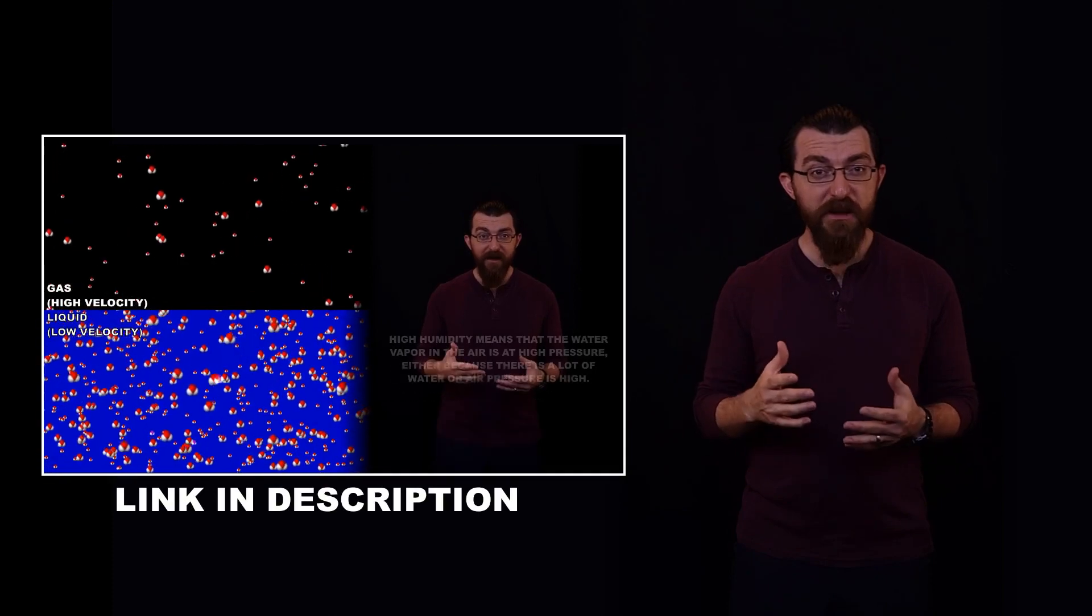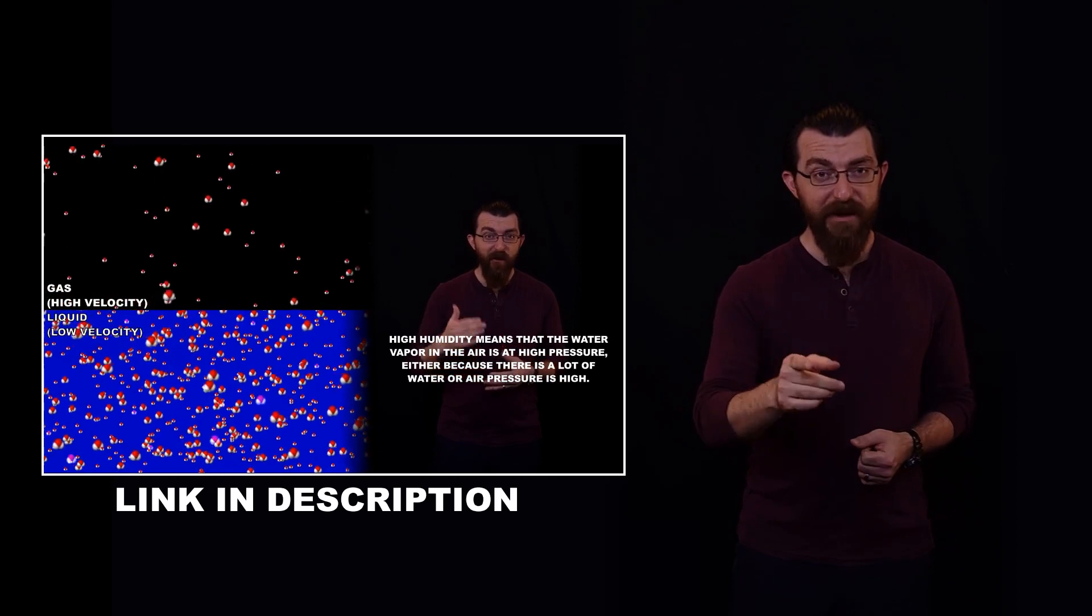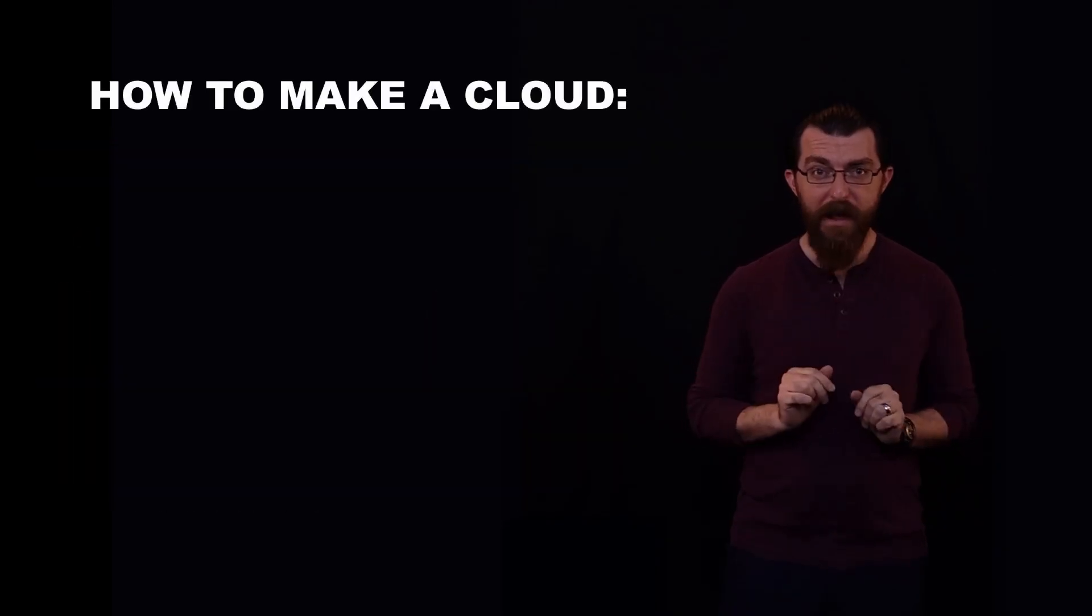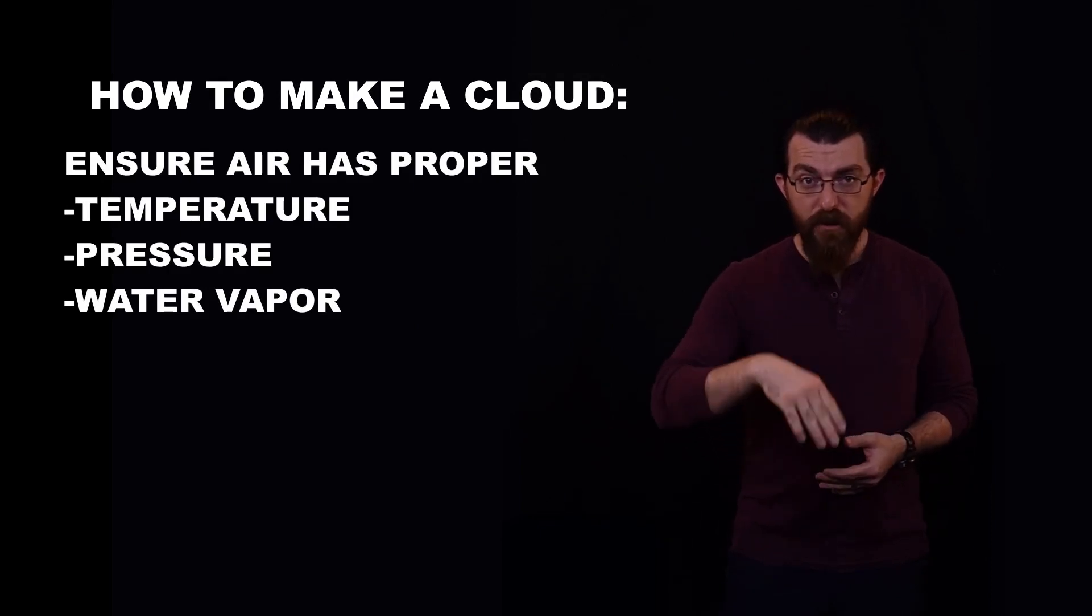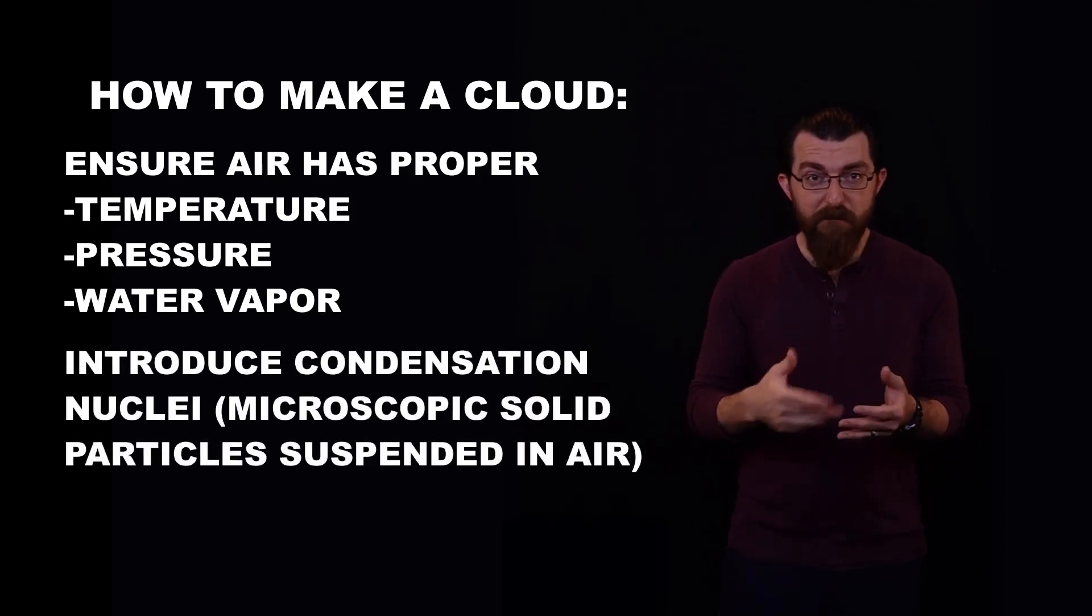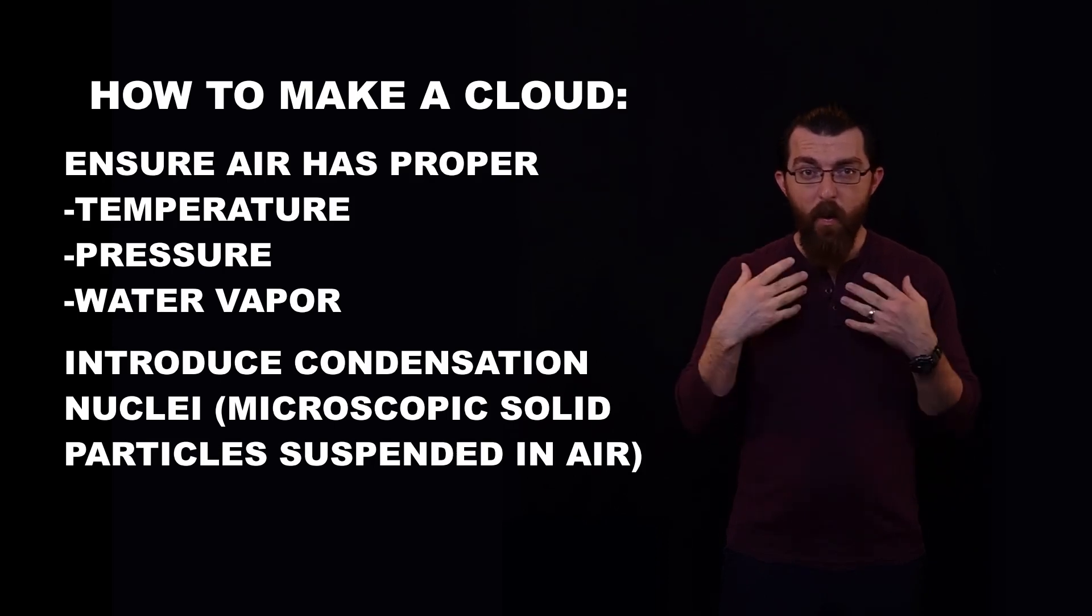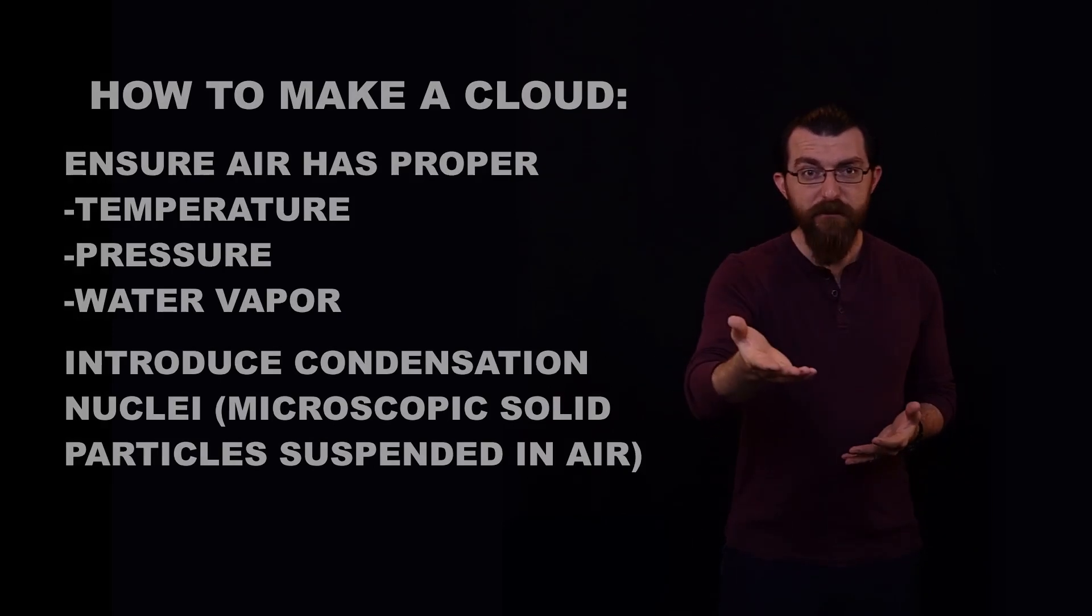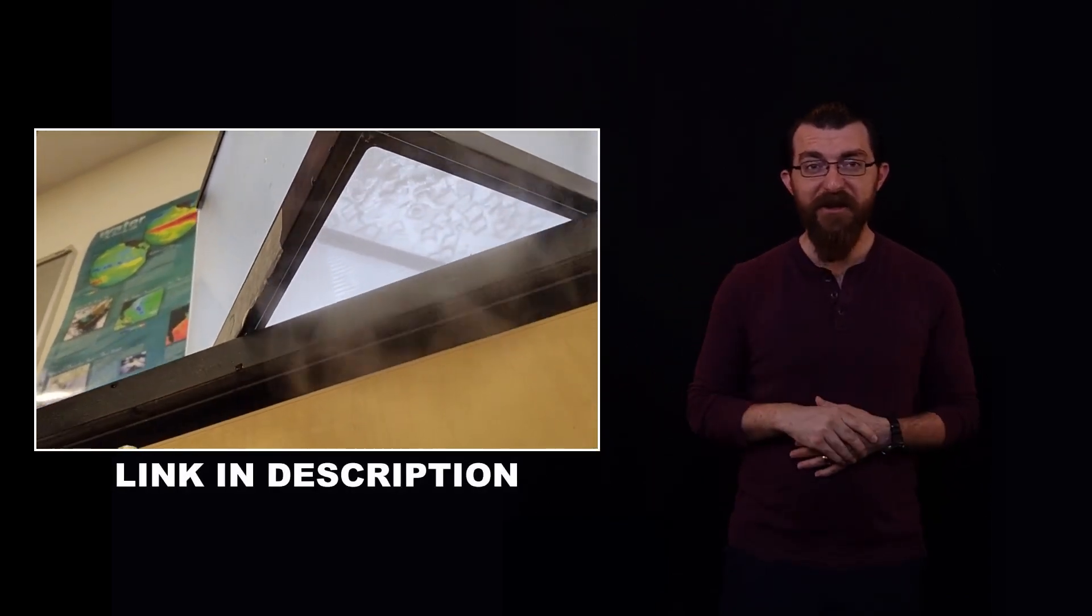If you'd like to see more discussion about these processes and how they relate to humidity in clouds, check the link. Here's how to make a cloud. Change the temperature and or pressure of air that contains water vapor so that the rate of condensation exceeds the rate of evaporation and give the water vapor some microscopic particles to stick to. This is a simple, well-understood mechanism that you can do yourself. For example, I have a classroom demonstration and you can see it if you check the link.